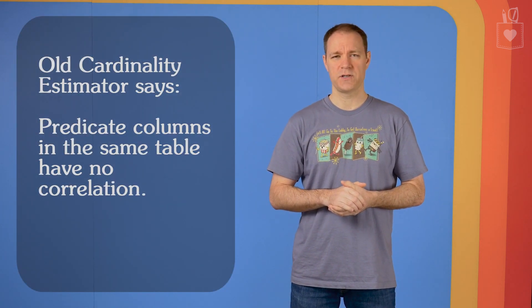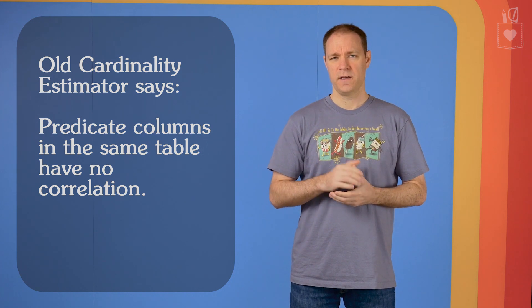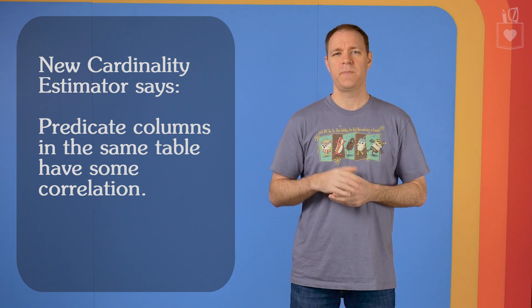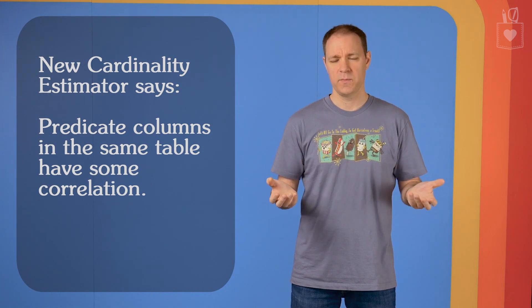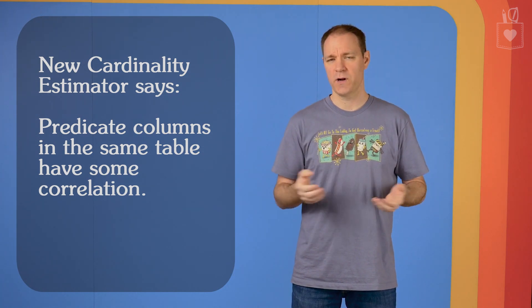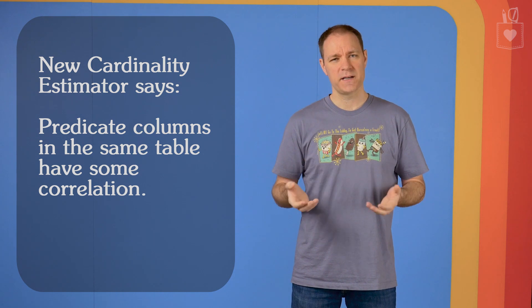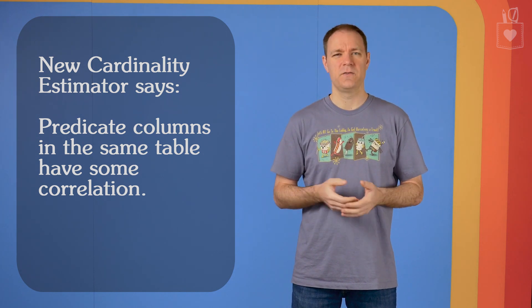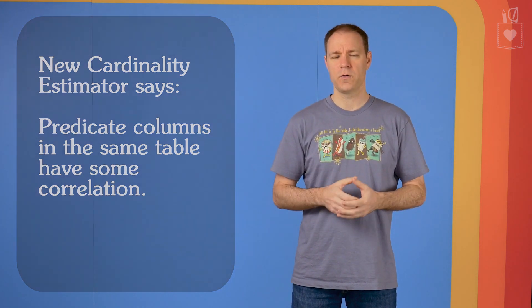One of the assumptions that changed between the old and new cardinality estimators is the assumption of independence — that is, the idea that two predicates in the same table have no correlation to each other. The new cardinality estimator assumes that because you're asking for predicate A and predicate B in the same table, in the same WHERE clause, those two predicates must have something to do with each other — that they're at least loosely correlated.